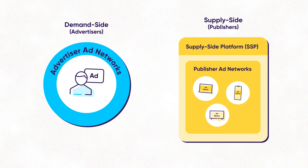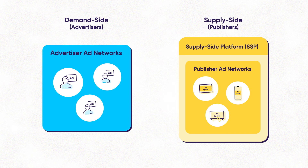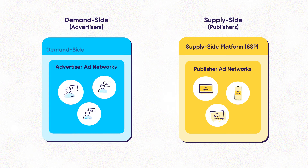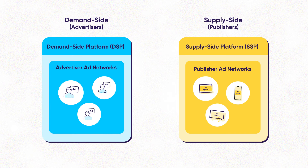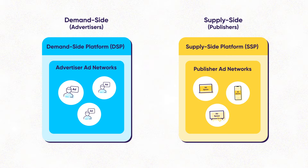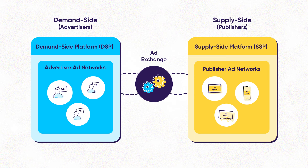The publisher ad network connects to a supply side platform to put the available impressions up for auction. Meanwhile, the advertiser ad network connects to a demand side platform, or DSP, which will automatically bid for ad space across multiple publishers. The DSP is connected to a data management platform, which feeds in audience data to find the perfect match. The two sides connect via an ad exchange — it's like a stock exchange for ad impressions.